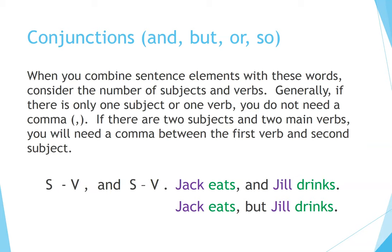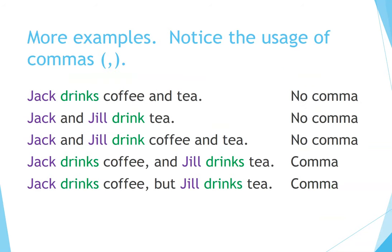Examples of comma usage: 'Jack eats and Jill drinks' — no comma needed with just one verb each in a simple join? Actually: 'Jack eats, but Jill drinks' uses a comma. More examples: 'Jack drinks coffee and tea' — no comma necessary. 'Jack and Jill drink tea' — no comma. 'Jack and Jill drink coffee and tea' — two subjects but one verb, no comma necessary. 'Jack drinks coffee, and Jill drinks tea' — two subjects and two main verbs, comma required. 'Jack drinks coffee, but Jill drinks tea' — comma required.